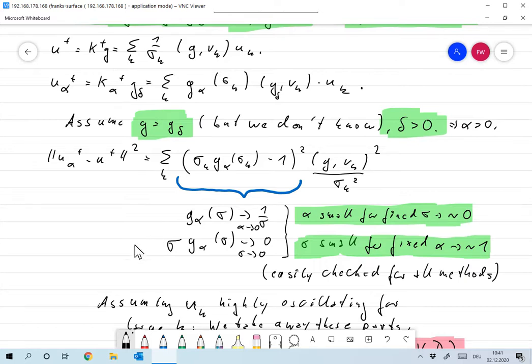So effectively what are we doing when we are computing u alpha plus for the correct g? We're replacing the coefficients over here, we're damping them. For sigma k large and k small this is almost one over sigma k, so the terms more or less coincide. But for sigma k small or k large this is almost zero, so effectively we are damping these coefficients and more or less leaving the terms out.